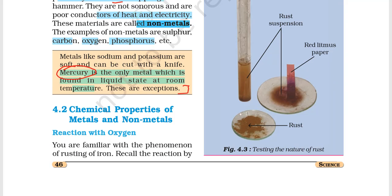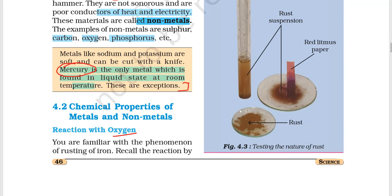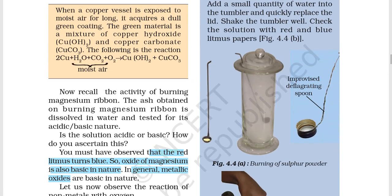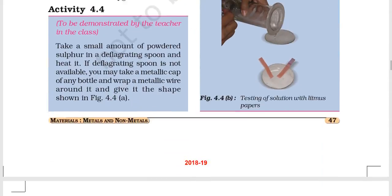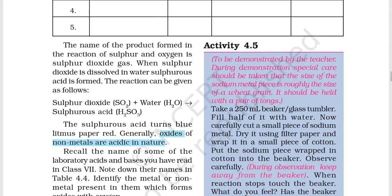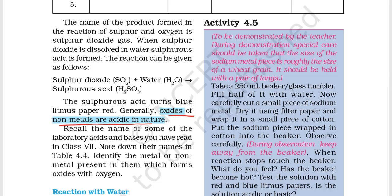Now we talk about the chemical properties of metals and non-metals. First, we talk about reaction with oxygen. When metals react with oxygen, the oxide formed turns red litmus blue — this means metal oxides are always basic in nature. For example, magnesium oxide is basic. Generally, metallic oxides are basic in nature. In contrast, the oxides of non-metals are always acidic in nature.